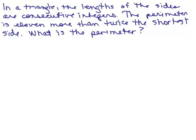First of all, you have to know what consecutive integers are. Consecutive integers are numbers like 5, 6, 7, one after the other or you might have 20, 21, 22. That would be three consecutive integers.